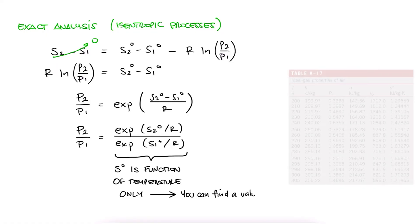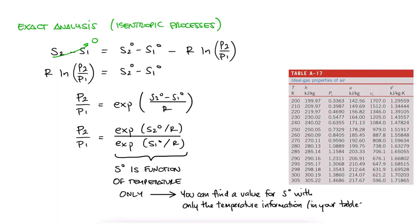Since this right-hand side is a function of temperature only, it makes sense that these values can be tabulated for a given temperature. And they are. We call these relative pressure.